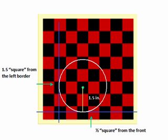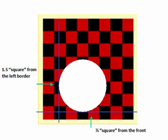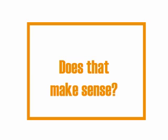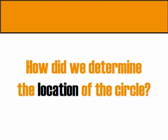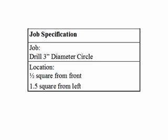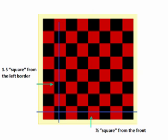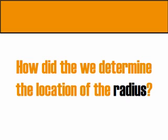The radial arm sweeps an inch-and-a-half path in a circular arc all the way around the circle and creates our three-inch diameter hole. To review: we had a surface and a three-inch diameter circle to place. We looked at the job spec — it says drill a three-inch diameter circle a half square from the front border and one and a half squares in from the left. We measured from the front and left borders and marked out our edges, giving us the points on the edge of our circle.